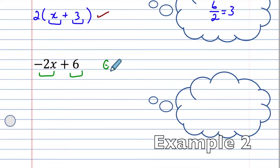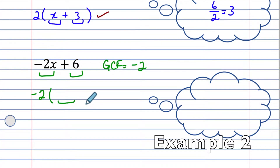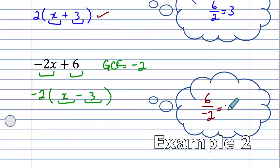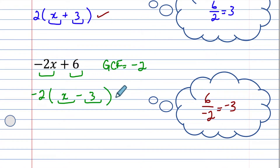Here we have two terms and the greatest common factor is negative 2. We write negative 2 on the outside and think about what the inside looks like. Negative 2 times what is negative 2x? That would be x. Negative 2 times what is 6? That would be negative 3, since 6 divided by negative 2 is negative 3. Check: negative 2 times x is negative 2x, and negative 2 times negative 3 is positive 6. We got it right.